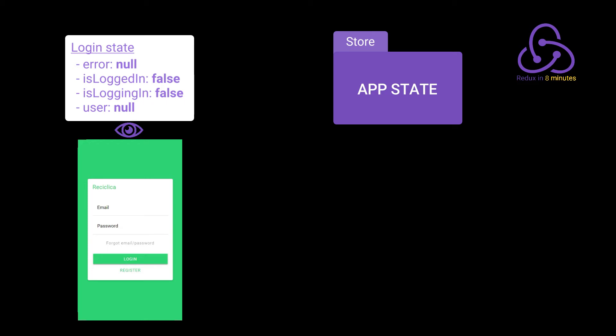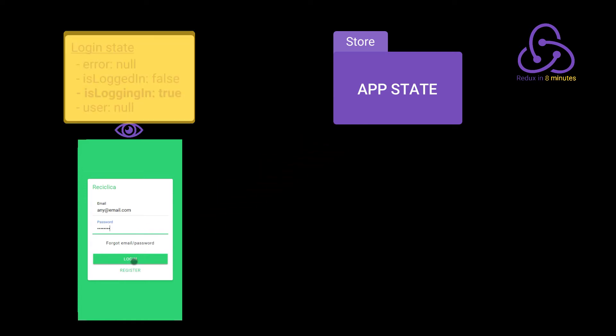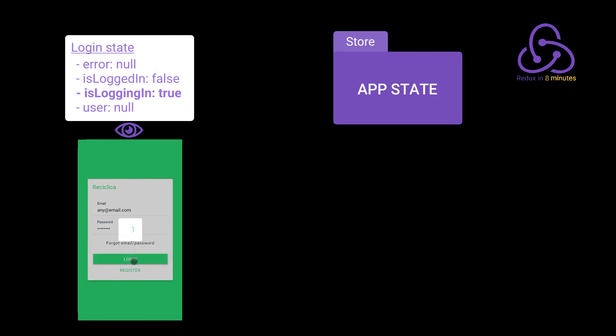Let's now imagine the user just entered the app and is currently on the login page. The login state informs us that pretty much nothing is happening — there is no error to show, the user is not logged in, the user is not trying to log in, and we don't even know who that user is. Now the user fills in the email and password and clicks the login button. This click fires an event that changes the state to inform that the user is trying to log in, and the login page will then show the loading component.